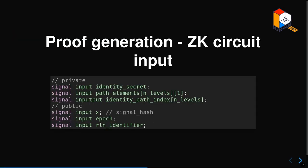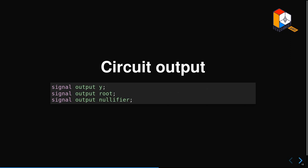Roughly in terms of inputs for proof generation: you have the identity secret, which is a Semaphore identity thing, plus path elements and identity path index - a standard Merkle proof. The public inputs include epoch, which is basically the external nullifier - usually a timestamp or period, like the voting booth analogy where you can only signal once per period. Then x is the signal hash - the hash of the actual thing you're sending. The RLN identifier is for a specific RLN app. The circuit outputs include y, which is a share of a secret equation, and the internal nullifier, which acts as a unique fingerprint for a given app, user, and epoch combination, plus the root for the local tree.